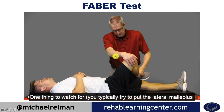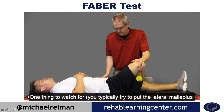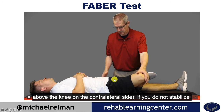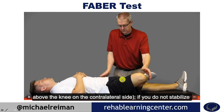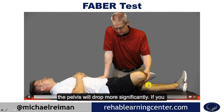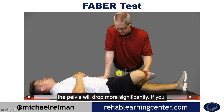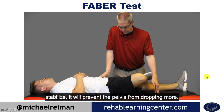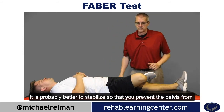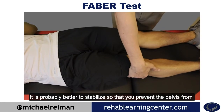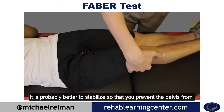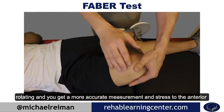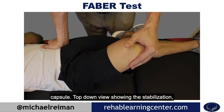One thing to watch for: you typically try to put the lateral malleolus above the knee on the contralateral side. If you do not stabilize the pelvis, the leg will drop more significantly. If you do stabilize, it will prevent the motion from dropping even more. It's better to stabilize so that you prevent the pelvis from rotating and get a more accurate measurement and stress to the anterior capsule.